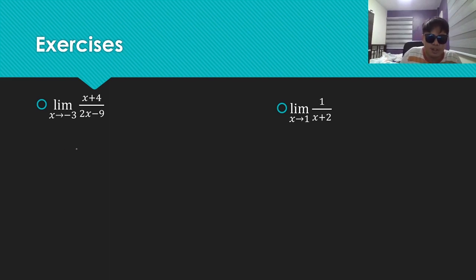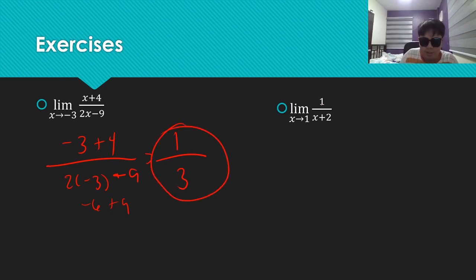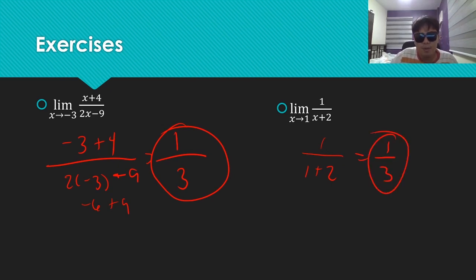Here are some exercises you can use substitution to solve — but remember, it is not substitution; you're using substitution to find the answer. Let's substitute negative 3: negative 3 plus 4 over 2 times negative 3 minus 9. The numerator is 1, and the denominator is negative 6 plus 9, which is 3. So the limit is 1 over 3. How about the limit of 1 over x plus 2 as x goes to 1? Substituting: 1 over 1 plus 2 equals 1 over 3. That's the answer.